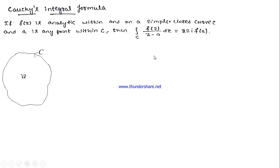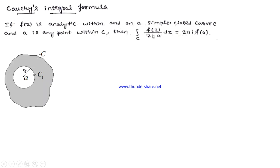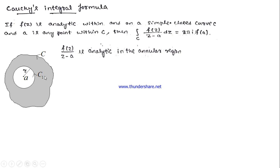We will now make use of Corollary 2. To use it, I am introducing a small circle C1 with A as its center and radius R units. The function f(z)/(z − A) becomes analytic in the annular region between C and C1. So by Corollary 2, the integration over C should be the same as the integration over C1 for this analytic function.